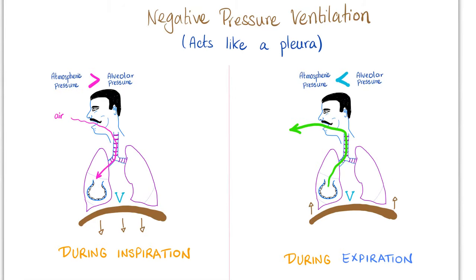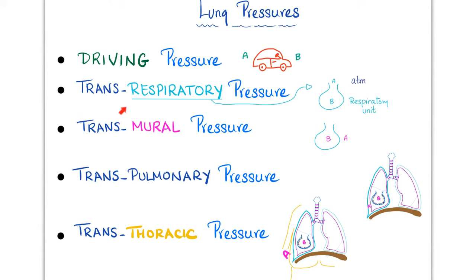Negative pressure ventilation — the iron lung — acts like the pleura. It creates a negative pressure, just like when the diaphragm contracts, forcing air in. On expiration, the opposite occurs. There are five lung pressures: driving pressure, trans-respiratory pressure, transmural pressure, transpulmonary pressure, and transthoracic pressure.